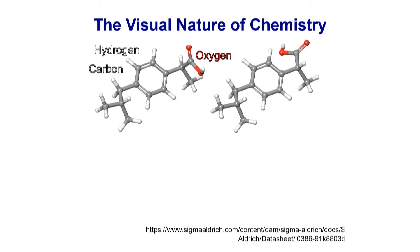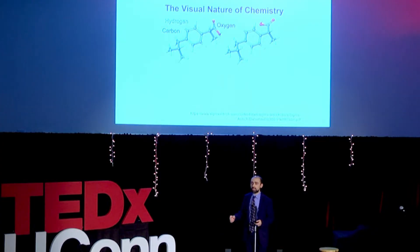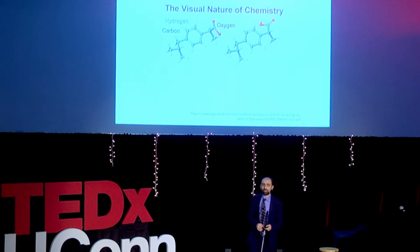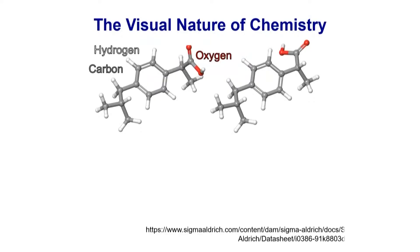Shown here is a three-dimensional ball-and-stick representation of a molecule that all of you have probably taken at some point to alleviate a pain or to lower a fever. It's ibuprofen, the active ingredient of Motrin. And it actually exists as a pair of structures that differ from one another in the same way your right hand differs from your left.